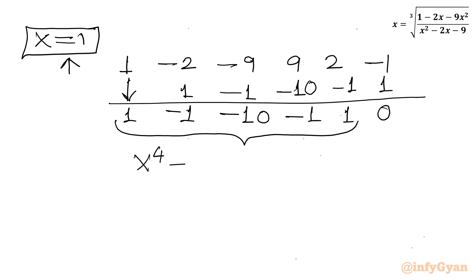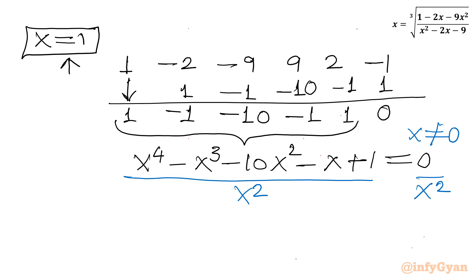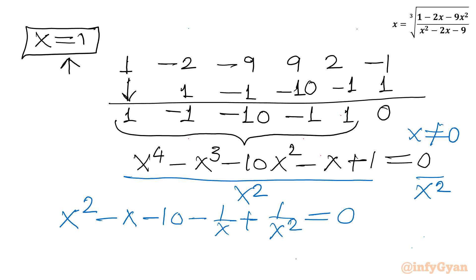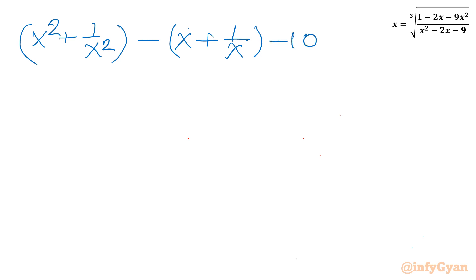So the remaining factor is x⁴ minus x³ minus 10x² minus x + 1 = 0. Since x = 0 doesn't satisfy this, we can divide both sides by x²: x² minus x minus 10 minus 1/x + 1/x² = 0. Grouping first and last terms, and middle terms: (x² + 1/x²) minus (x + 1/x) minus 10 = 0.